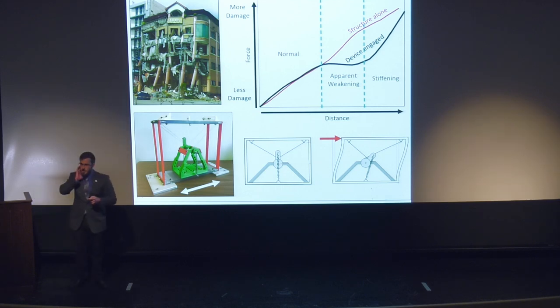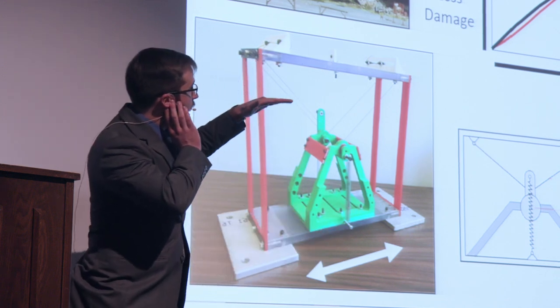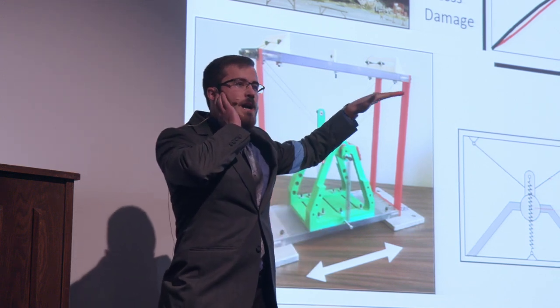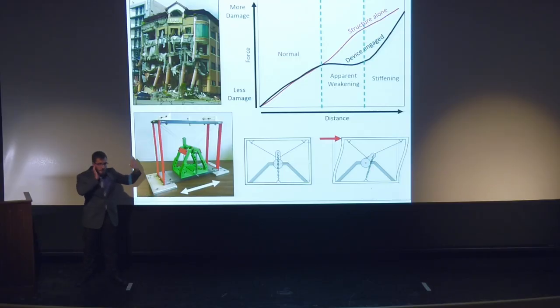This may seem counterintuitive, but it actually provides exactly the result we're after: an apparent weakening force plateau in the middle of the graph. This means that even as the structure bends further over, there's no increase in force. We don't want our building to be pushed all the way over though, so at the end we add stiffness.